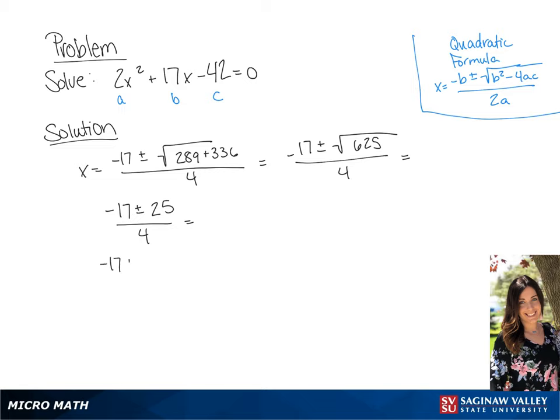So if we have negative 17 plus 25 over 4, we're going to get an answer of 2.